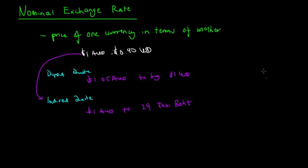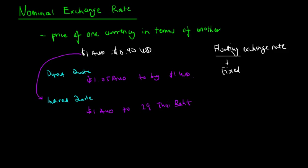In Australia we have what is called a floating exchange rate. Rather than being fixed by the RBA, the exchange rate is determined by the forces of supply and demand.